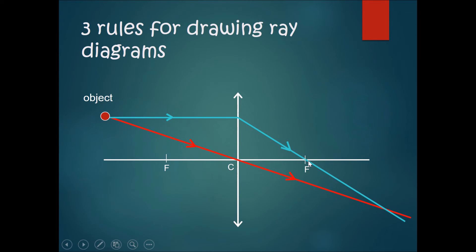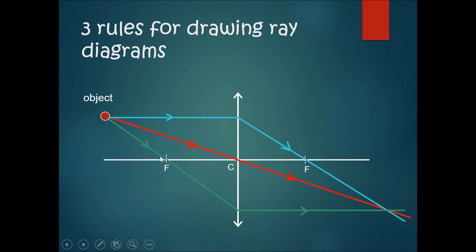Now apply rule three: draw a line from the tip of the object through the focal point on the same side — when it hits the lens it bends and goes parallel to the principal axis. You'll notice there is a place where all three lines converge, and this is the exact position of the image produced by the object through the lens — this is the position of the sharp image.